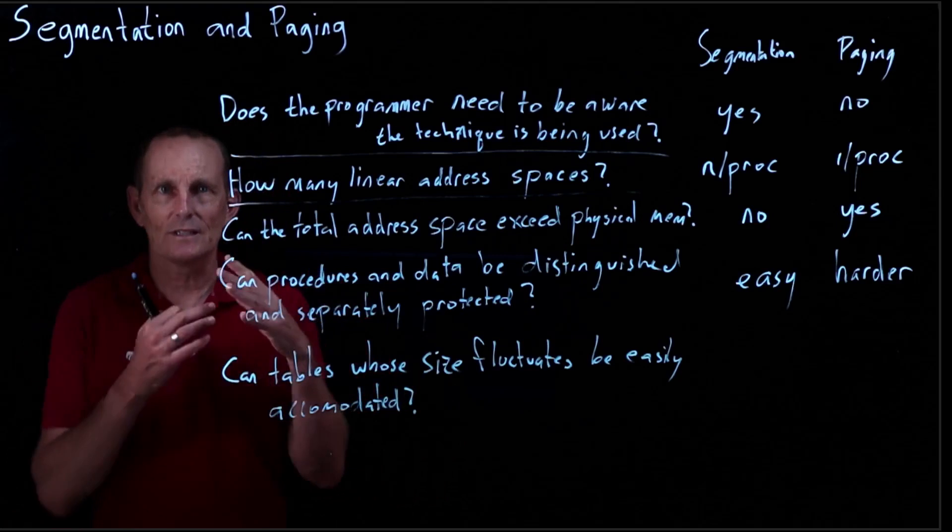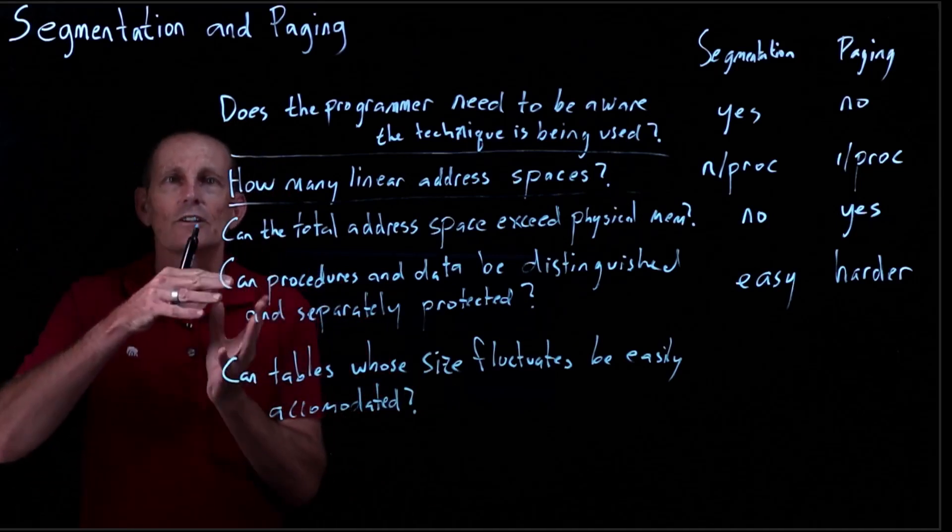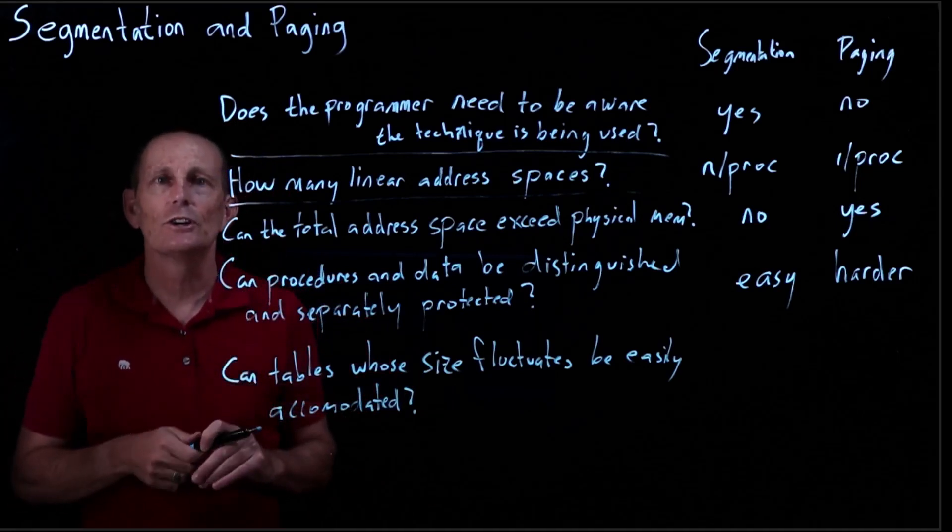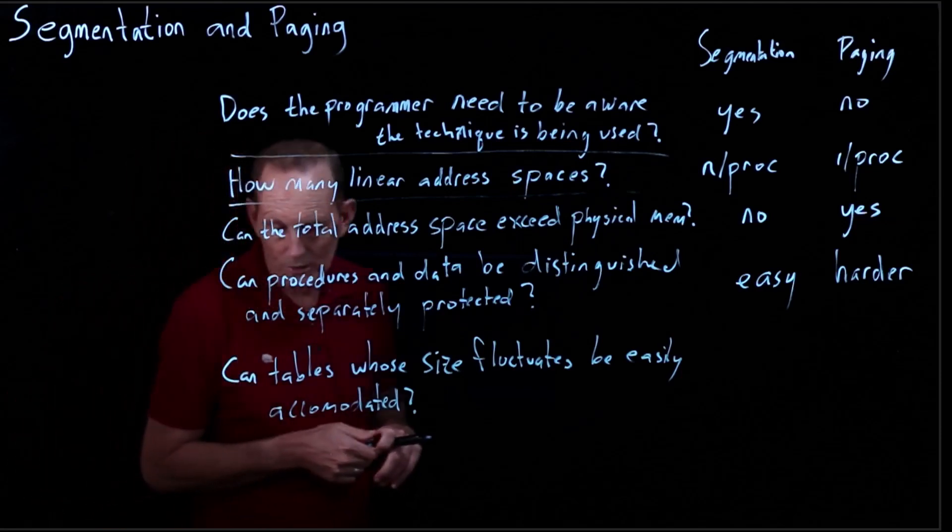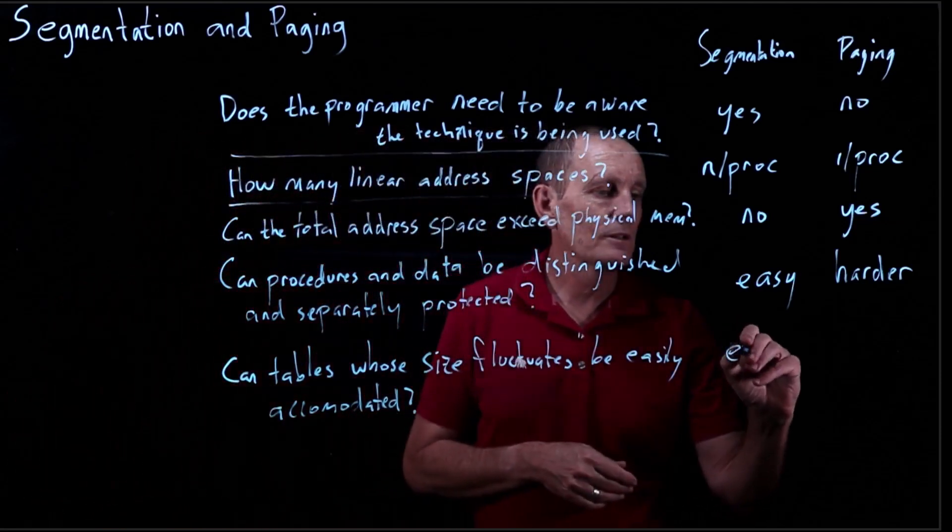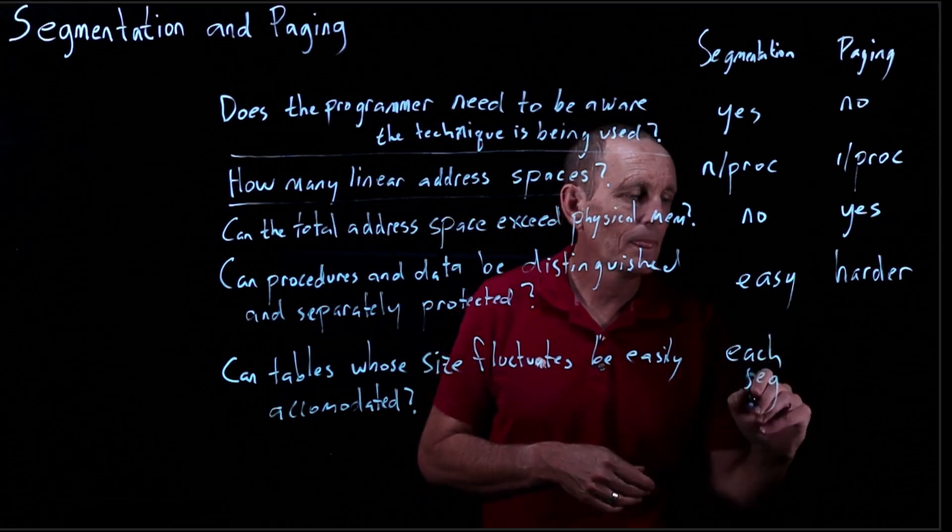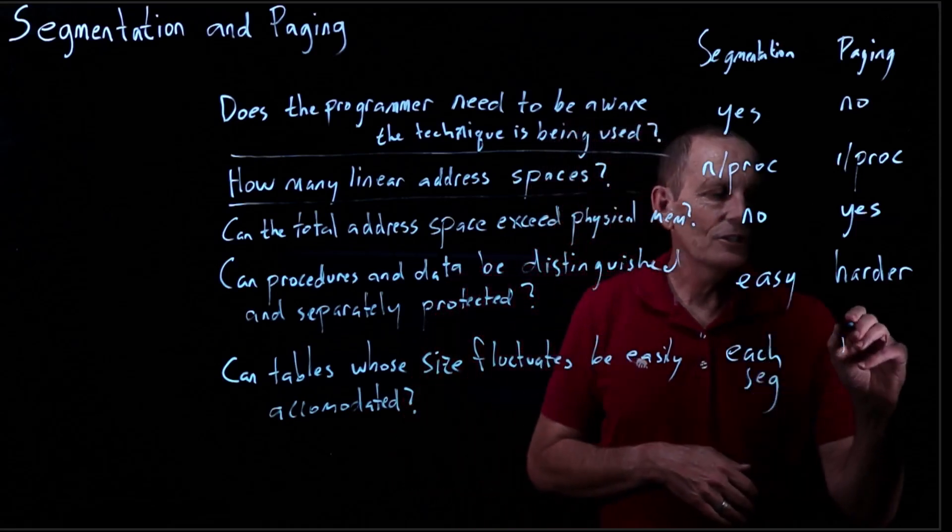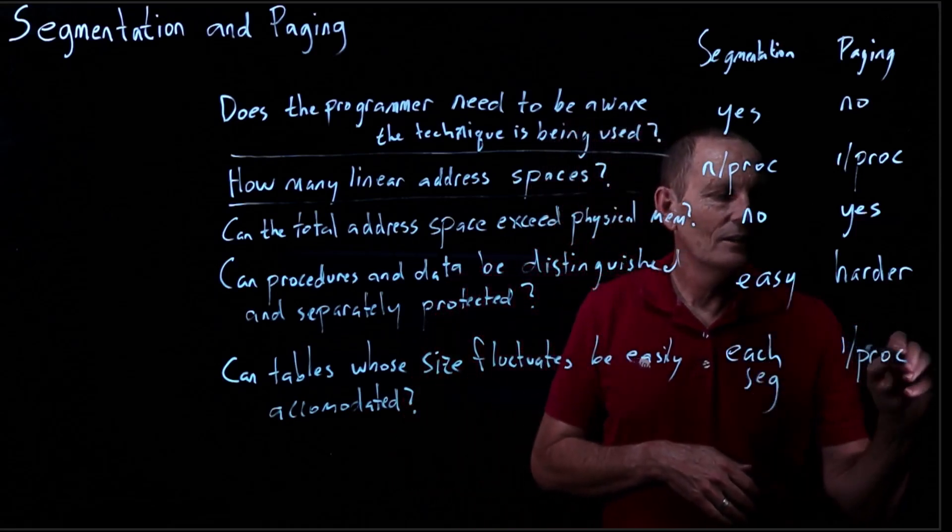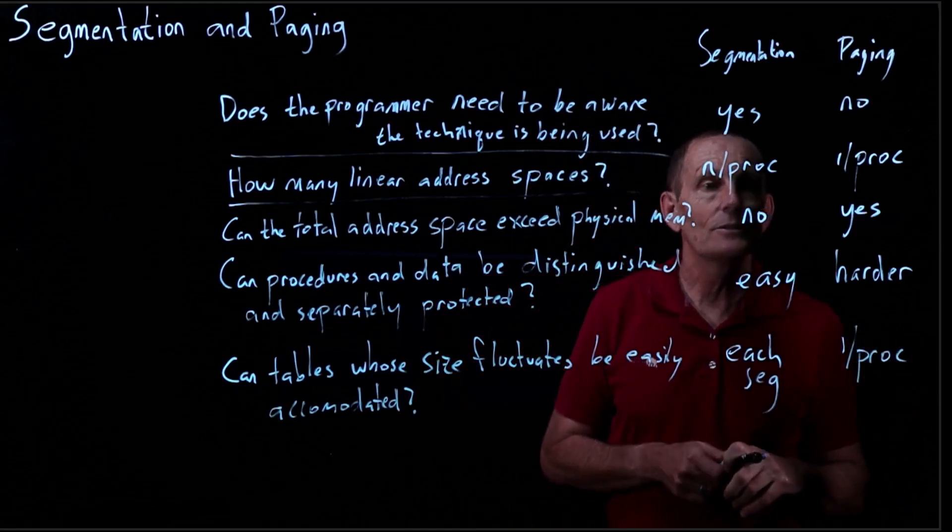And for segments, that's pretty easy, because a segment basically represents an area of memory, and you can make that segment larger or smaller easily. So you can do that with each segment. But for paging, it's just really one per process is the easiest way to do that.